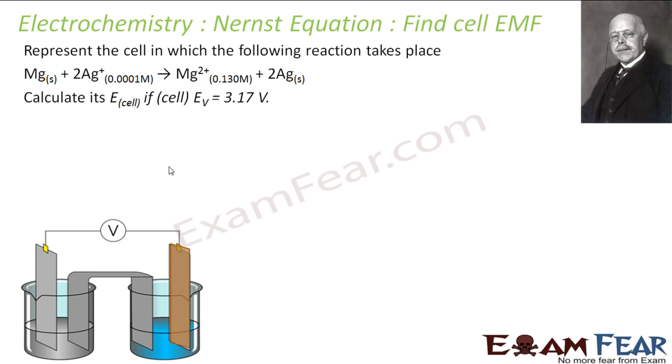Let's take one example. First, we will represent the cell in which the following reaction takes place: Mg is getting oxidized to Mg2+, and Ag is getting reduced from Ag+ to Ag. This is oxidation and the other is reduction. We can represent the cell in this fashion: Mg becomes Mg2+, concentration of Mg2+ is 0.13 M, and Ag+ concentration is 0.0001 M is becoming Ag. That is my cell representation.